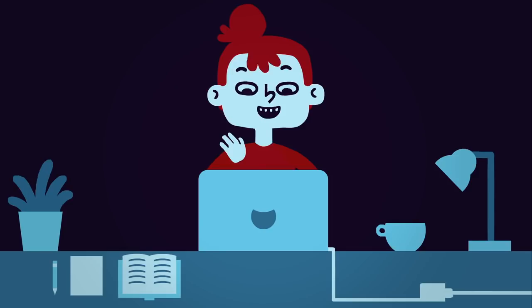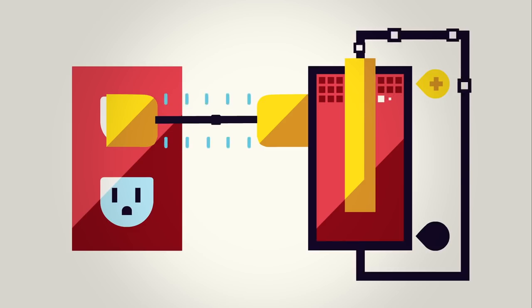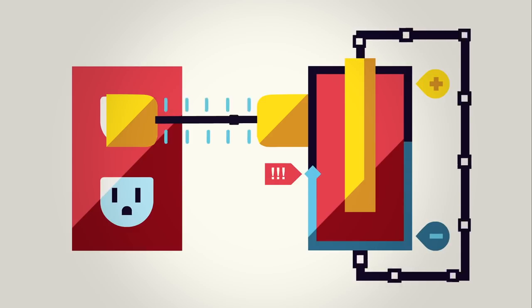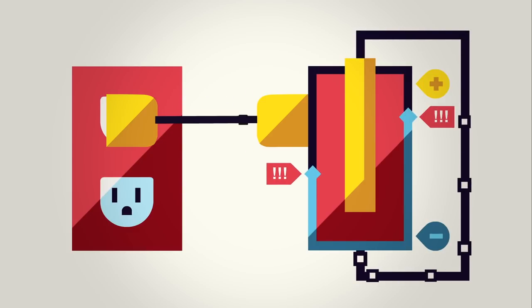But even rechargeable batteries don't last forever. Over time, the repetition of this process causes imperfections and irregularities in the metal's surface that prevent it from oxidizing properly. The electrons are no longer available to flow through a circuit, and the battery dies.